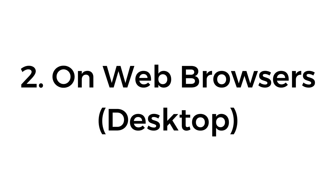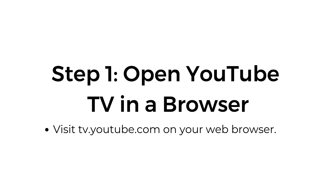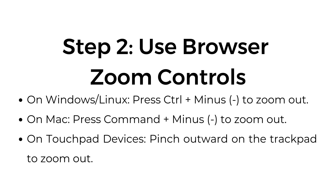On web browsers, desktop. Step 1: Open YouTube TV in a browser. Visit tv.youtube.com on your web browser. Step 2: Use browser zoom controls. On Windows or Linux, press Ctrl + minus to zoom out. On Mac, press Command + minus to zoom out. On touchpad devices, pinch outward on the trackpad to zoom out.